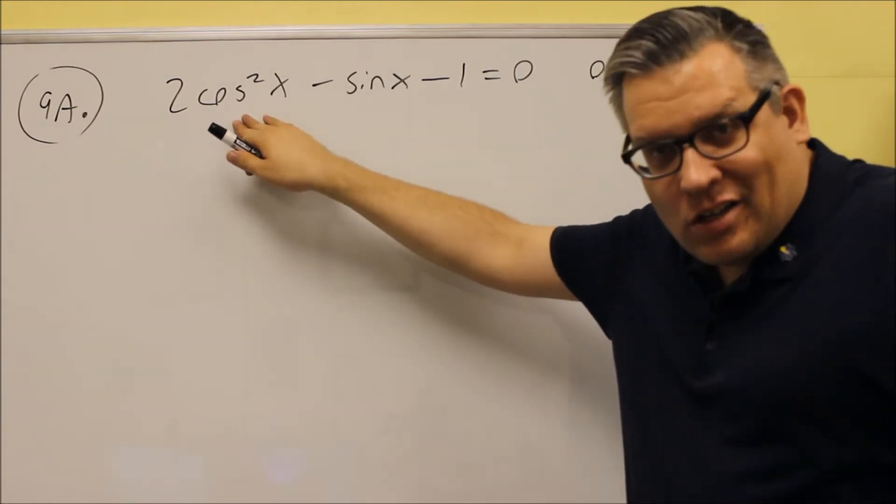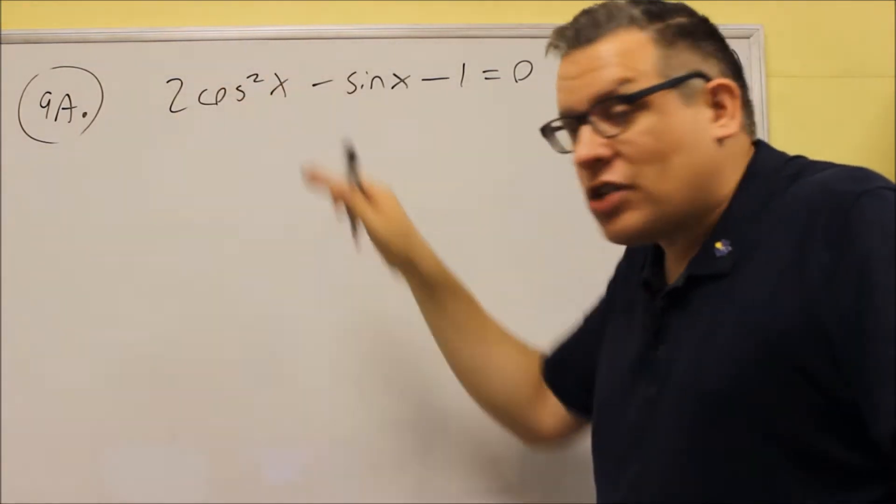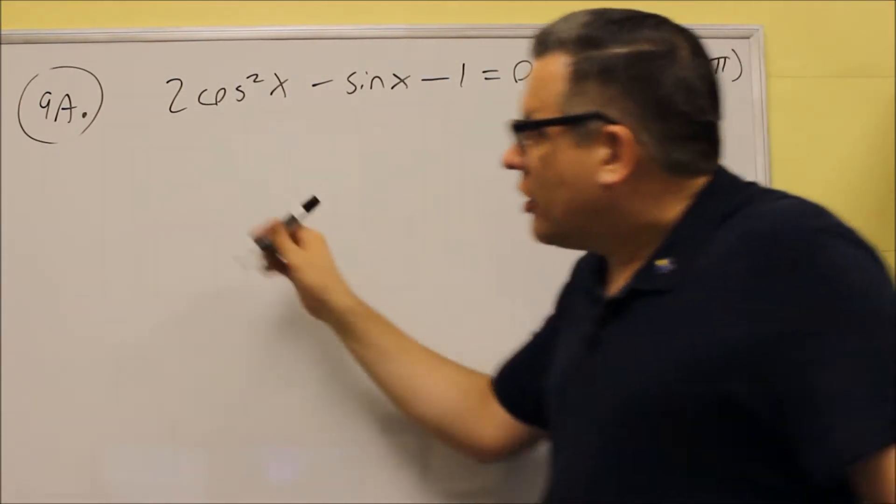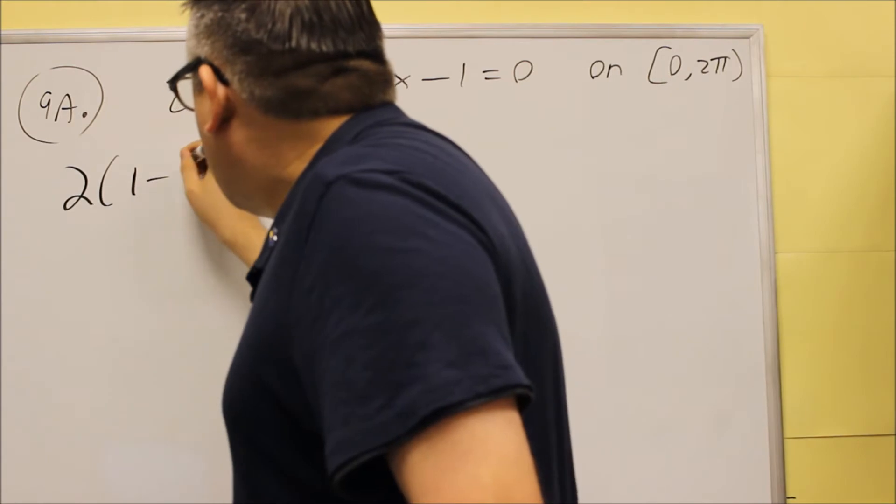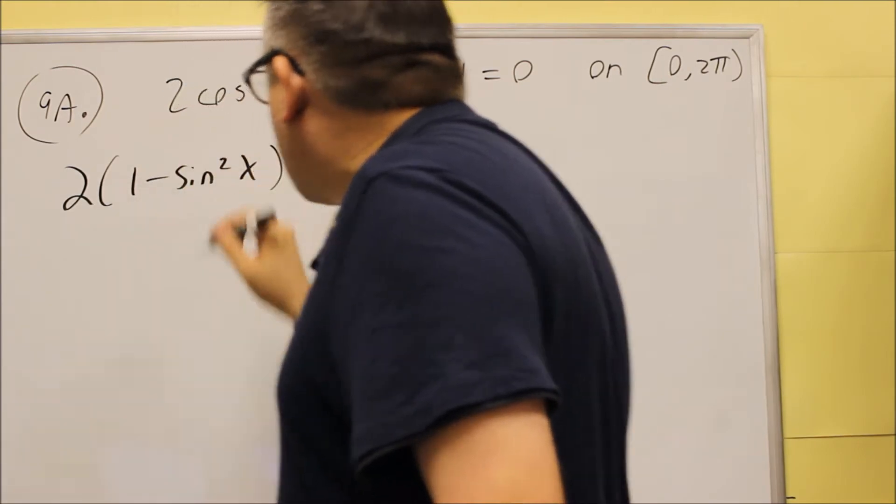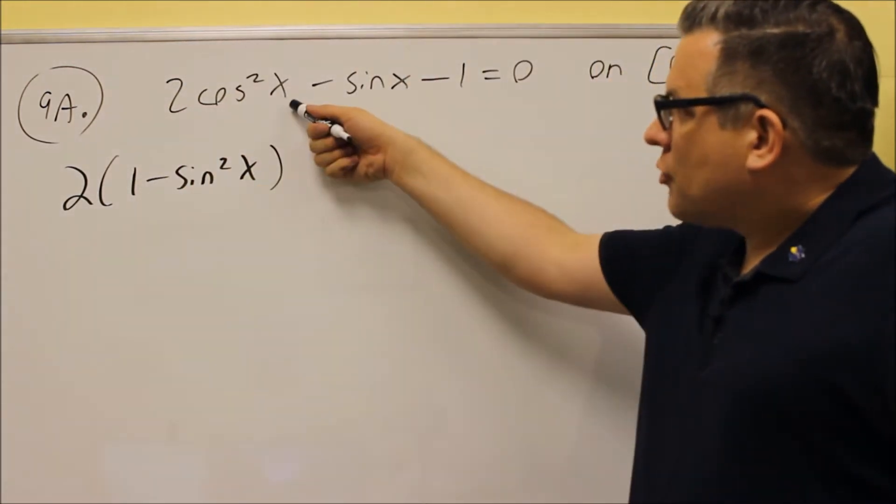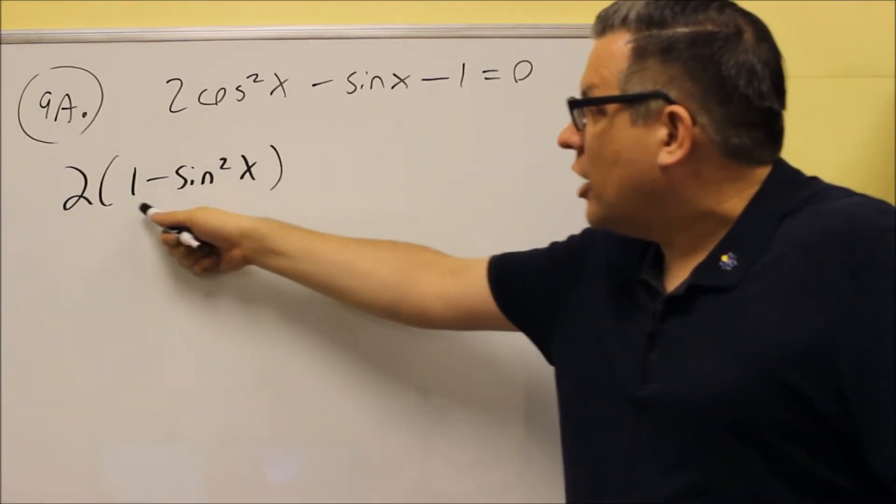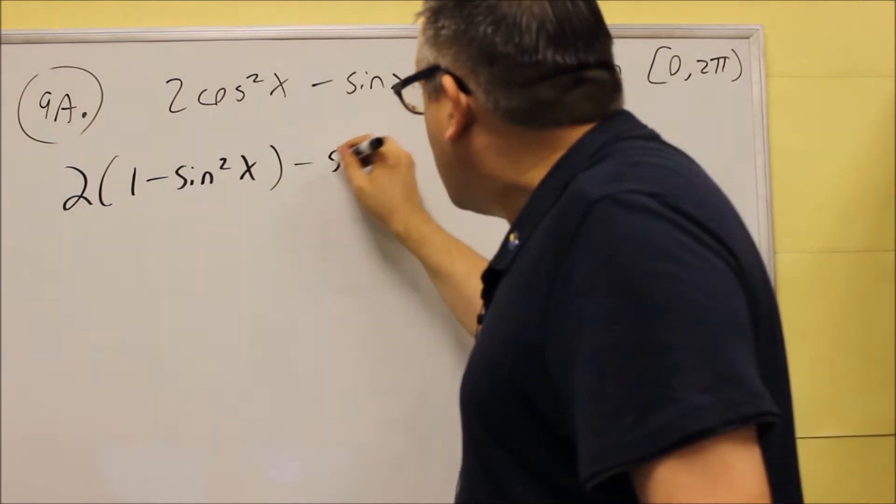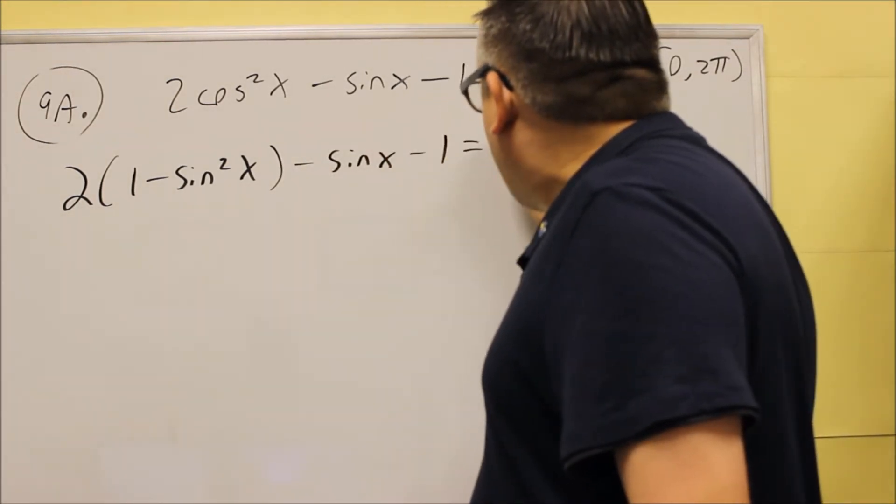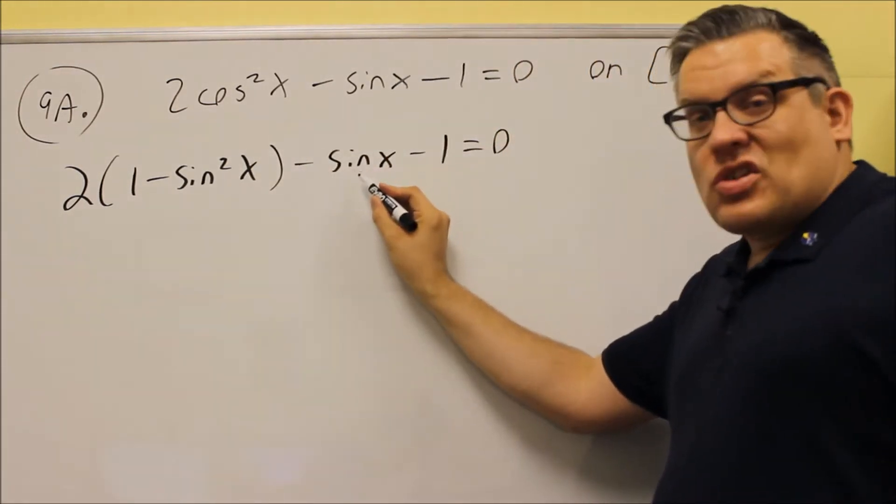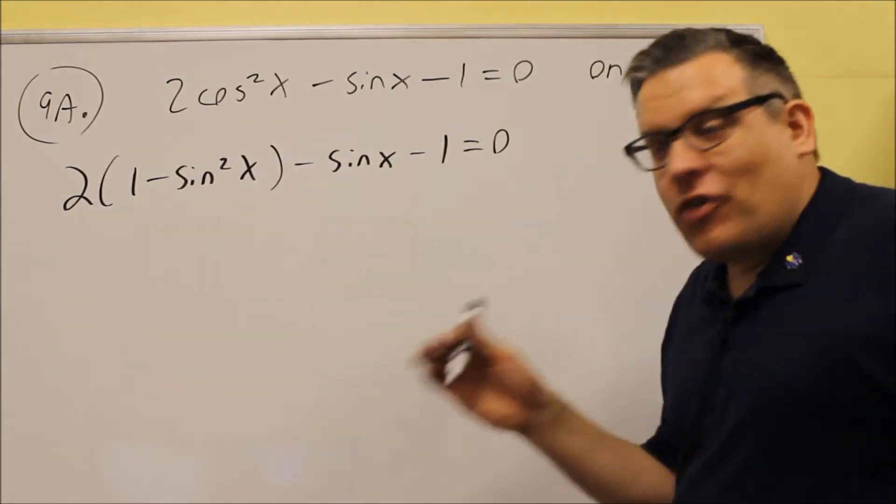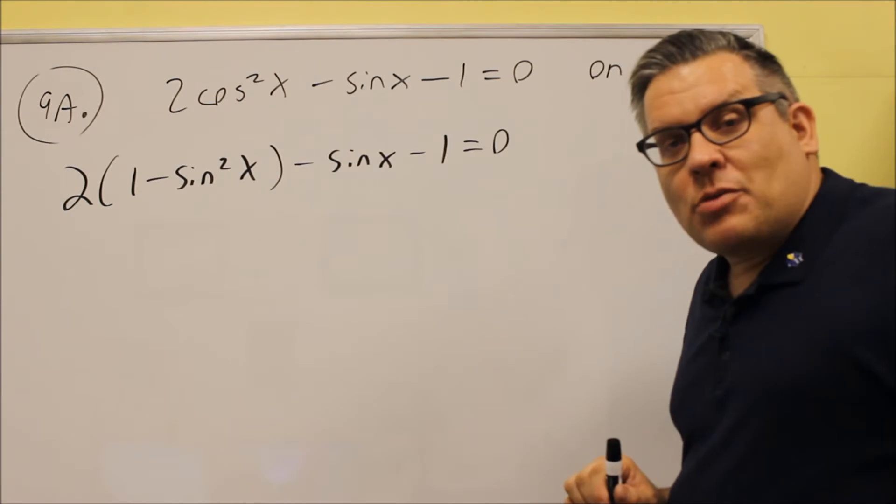So I want to look for an identity, an identity that allows me to change the cosine squared into something with a sine. The identity that we're going to use is 1 minus sine squared x. So cosine squared is the same thing as 1 minus sine squared x, so we're just going to replace the cosine with the identity. The reason for doing that is because the rest of the stuff that we have here is a sine and a 1, and so hopefully we can combine that together and be able to factor if we have all the same trig functions.